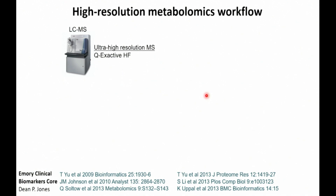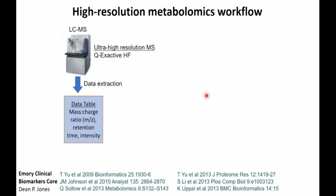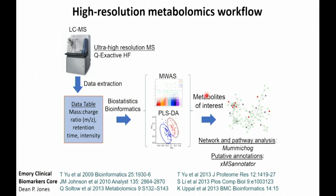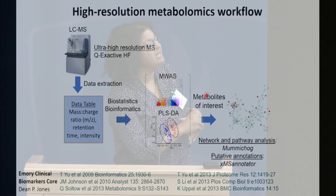We performed untargeted metabolomics using ultra-high-resolution mass spec, generating a large data table with mass-to-charge ratios, retention times, and intensities. We're essentially categorizing all the chemicals based on their chemical measurements without annotating them at this phase — just looking at them as individual peaks in mass spec. Using those identifiers, we then performed bioinformatics and biostatistics algorithms to find which peaks are specifically associated with Plasmodium falciparum compared to non-malaria. To get into the biology, we ran the list through network analyses, pathway analysis, and assigned putative annotations by looking at mass-to-charge ratios and reference databases. We then confirmed data using targeted mass spec and reference compounds.